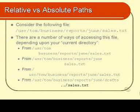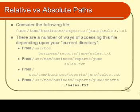What you can see here is that the name of the file you need to type in to access sales.txt differs depending on where you happen to be at the time. The simplest thing to type is just sales.txt, but in order to type that, you have to be in the same directory as sales.txt. You can access sales.txt from no matter where you are.